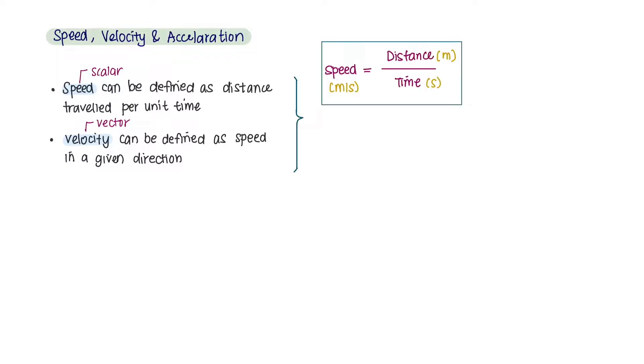Both speed and velocity can be calculated by the formula distance over time. However, in some cases, the speed of a moving object is not constant.